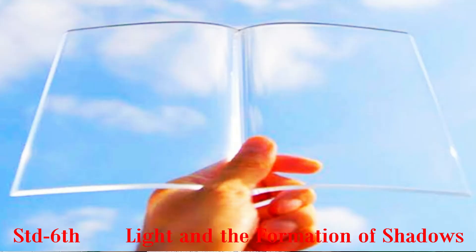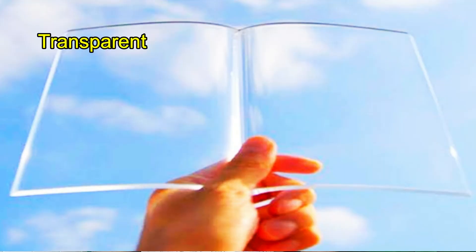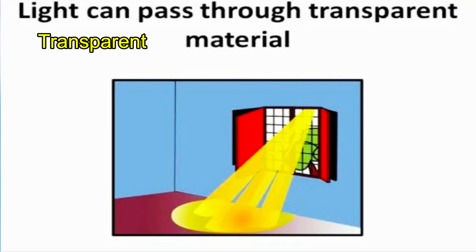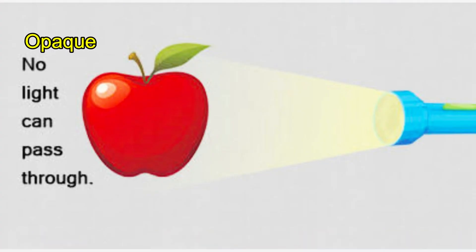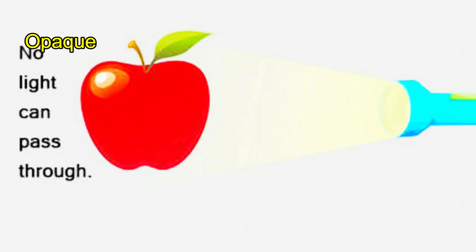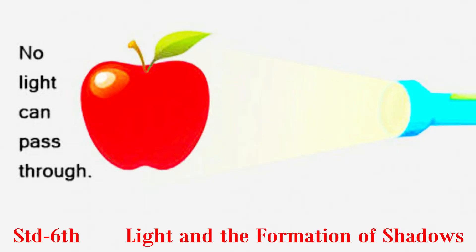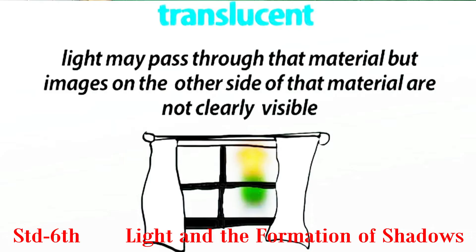Transparent: An object that allows light to pass through it is called transparent. Opaque: An object that doesn't allow light to pass through it is called opaque. Translucent: An object that allows light to pass through it partially is called translucent.